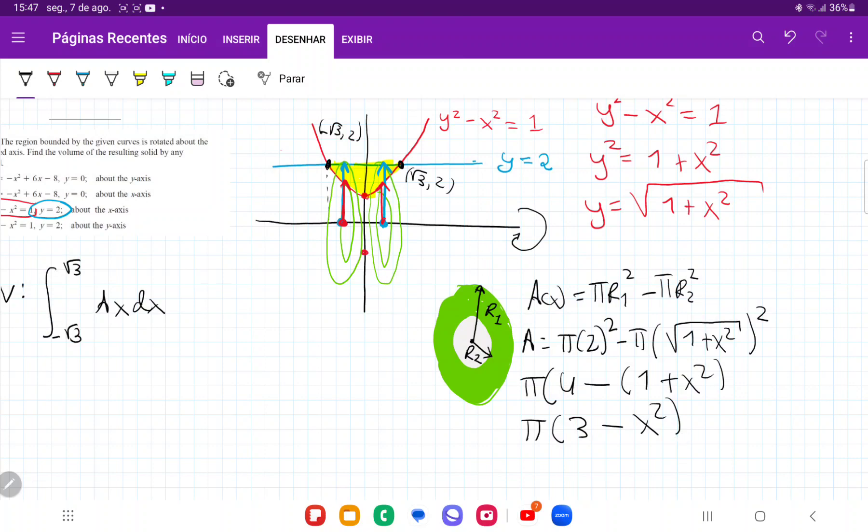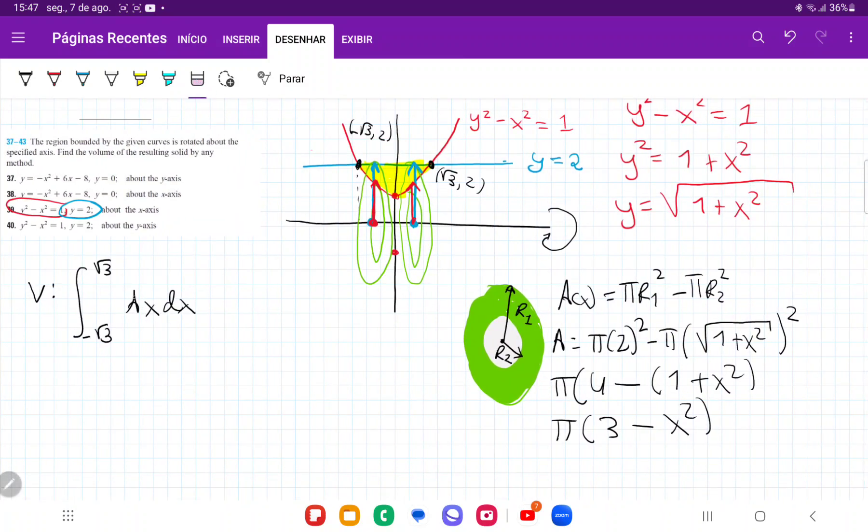This pi times 3 minus x squared, it's going to give me the ring at any value of x. Like if I put it at x is equal to 1, it's going to give me the area of the ring at it. And so if I sum up all these rings, I'm going to get a volume. So I'm going to sum up, it's going to be pi, I'm going to put that outside. And then that gives me 3 minus x squared and all of this times dx.